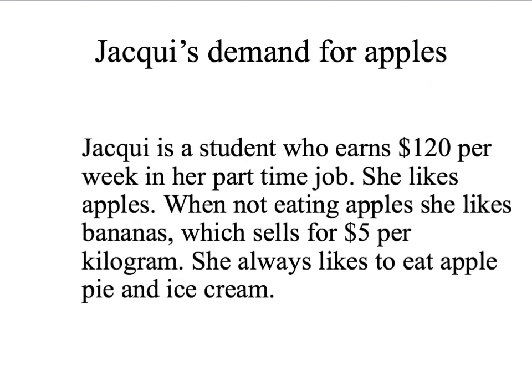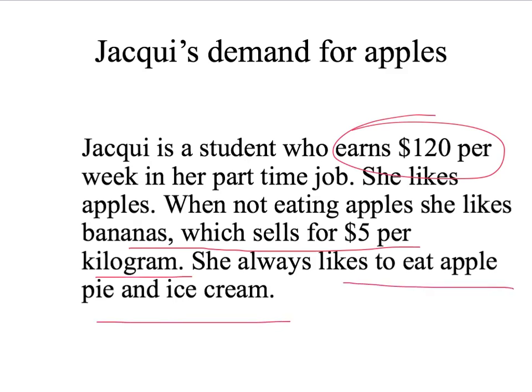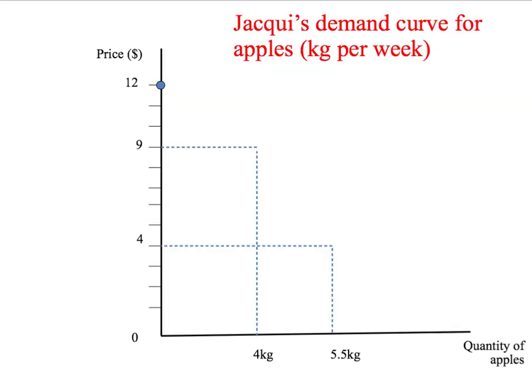We know some things about Jackie. Jackie is a student who earns $120 per week — that's her income. She likes apples, but she also likes bananas, and the price of bananas is $5 per kilogram. She also likes to eat apple pie and ice cream. Given Jackie's income, the price of bananas, and the price of ice cream, what does Jackie's demand curve for apples look like?